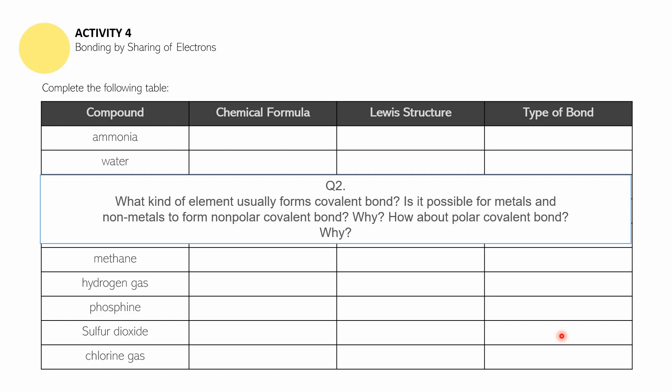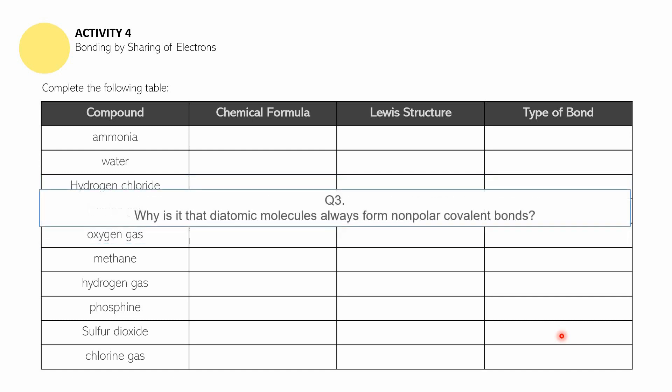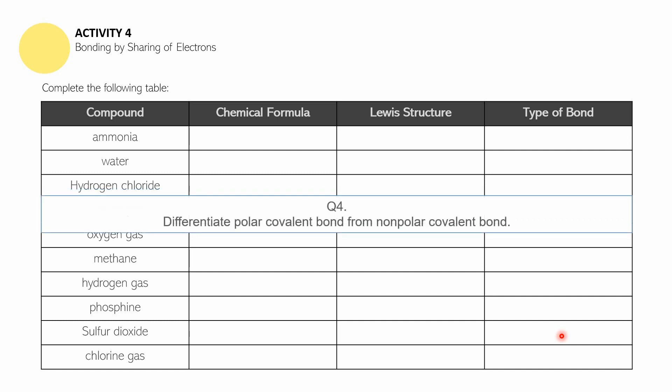Question three: why is it that diatomic molecules always form non-polar covalent bonds? Question four: differentiate polar covalent bond from non-polar covalent bond. Pause the video if you need more time to answer these questions.